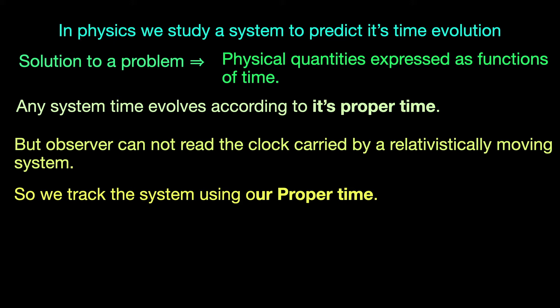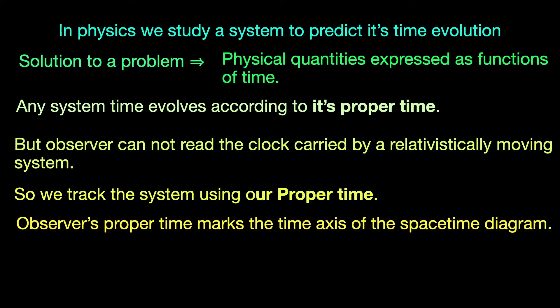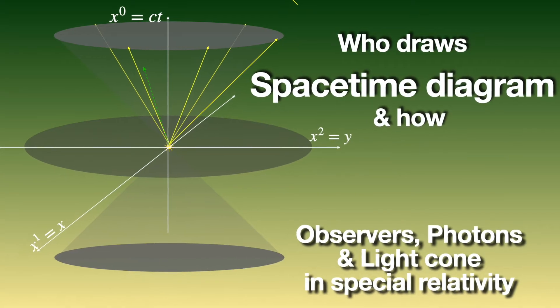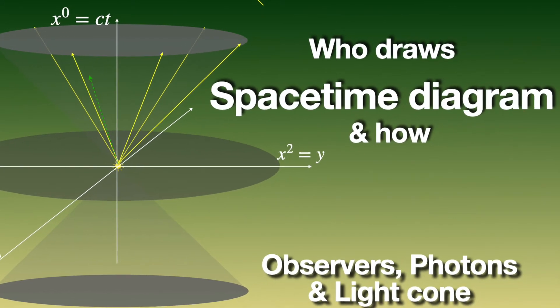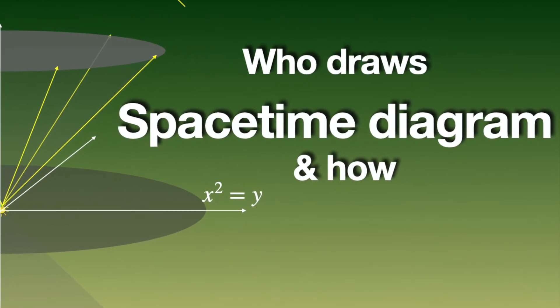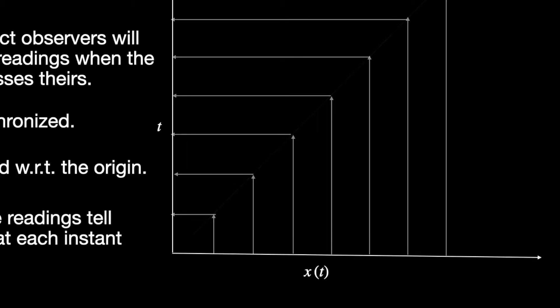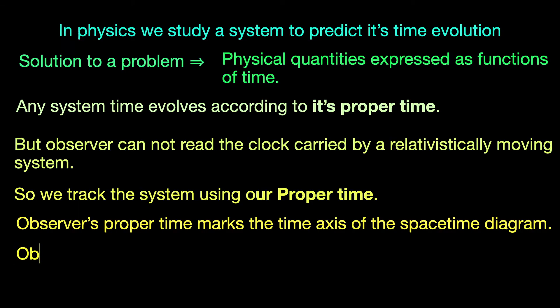One is the time shown by the clocks in our rest frame, for example, our wristwatch or our mobile phones. These give us our proper time and we use it to mark the time axis of the space-time diagram that we draw for the system. By the way, we have a video where we have explained how to draw space-time diagram, what we mean by an event and its space-time coordinates, how events are observed, who observes them and how these observers are placed, the whole nine yards. So make sure you check it out. Link is in the i button and also in the description. So our proper time serves as the coordinate time and we always refer to it as the coordinate time. We never even think of it as proper time. For the rest of this video also, we will refer to our proper time as coordinate time just to avoid any possible confusion.